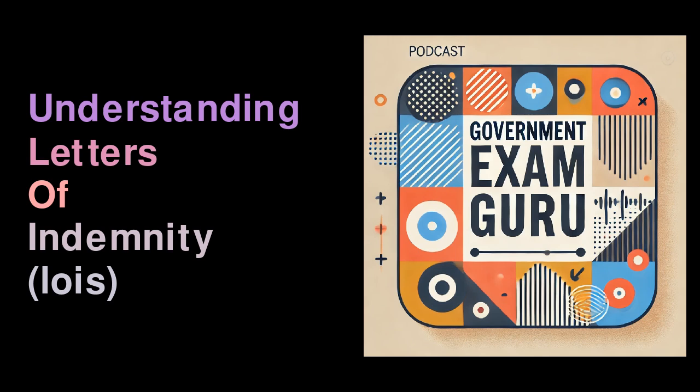What is a Letter of Indemnity? An LOI is a formal document that ensures certain conditions will be met between two or more parties involved in a contract, or it guarantees compensation in case those conditions are not fulfilled. The core purpose of an LOI is to protect a party from potential losses arising from a breach of contract by another party. Essentially, it acts as a form of insurance that compensates one party for losses incurred due to the other's failure to meet contractual obligations.